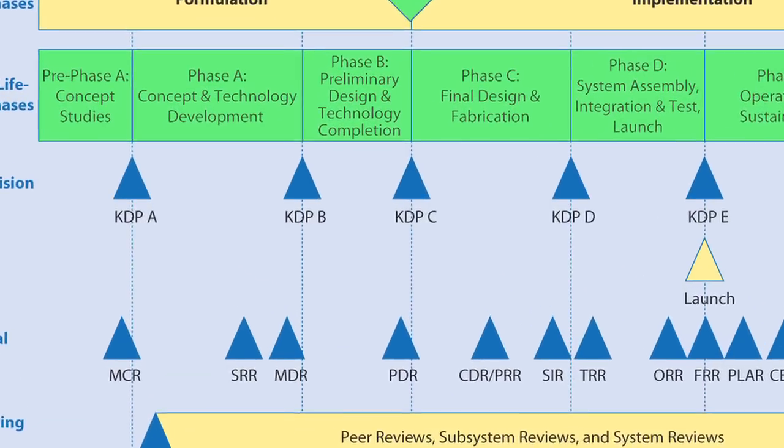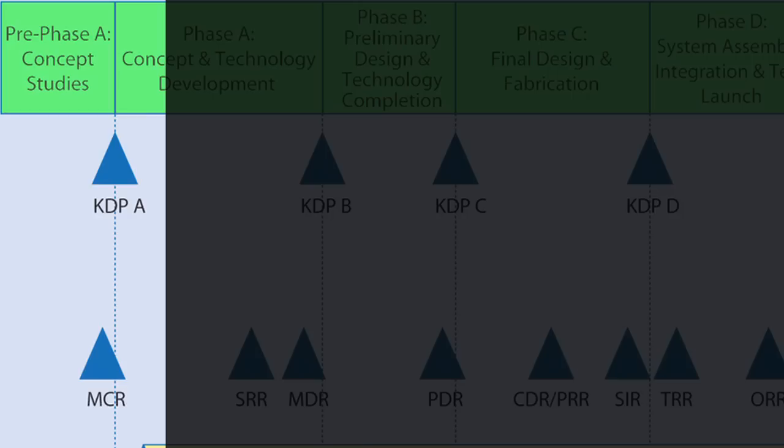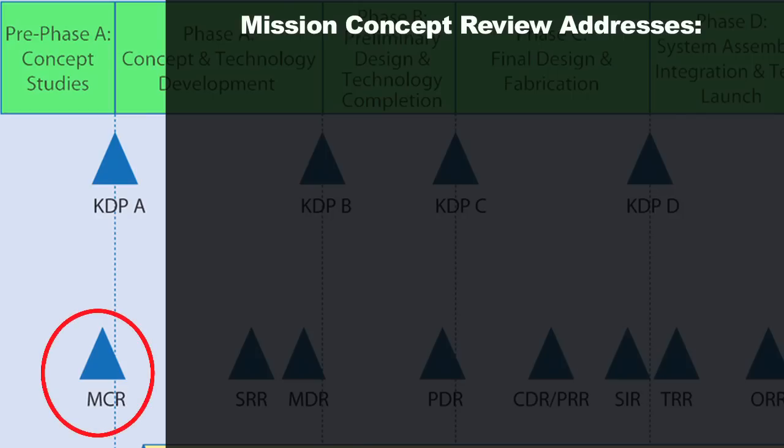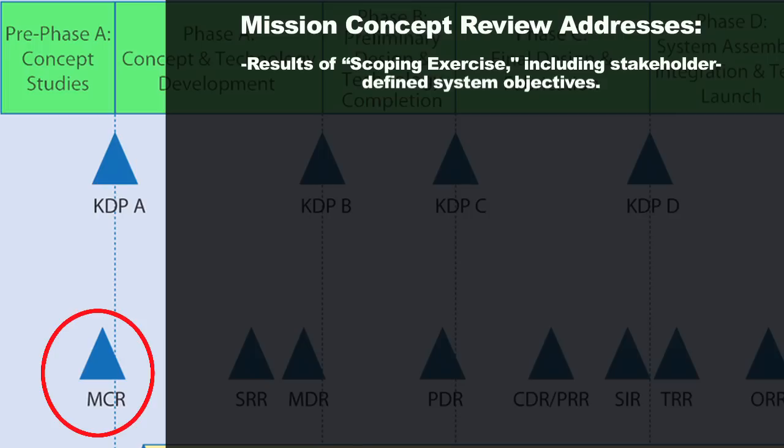We're going to talk about technical reviews throughout the life cycle. The first one happens here in Pre-Phase A and it's called the Mission Concept Review. The Mission Concept Review is your first big technical review — an external team comes in and they're going to look at things like the result of a scoping exercise, which includes stakeholder-defined system objectives.